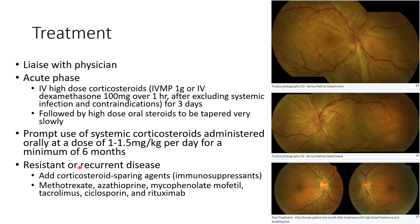For resistant or recurrent disease we have to add corticosteroid-sparing agents, that is immunosuppressants like methotrexate, azathioprine, mycophenolate mofetil, tacrolimus, cyclosporine, and rituximab. These images show bilateral serous retinal detachment in a 40-year-old female patient with VKH disease, and 1 month after treatment with high-dose prednisolone and azathioprine, the serous detachment has resolved in both eyes.